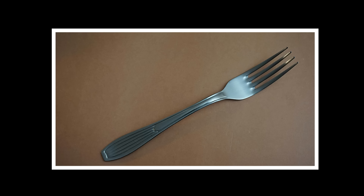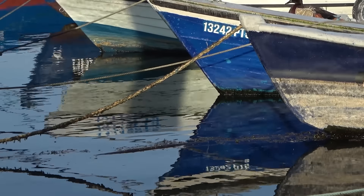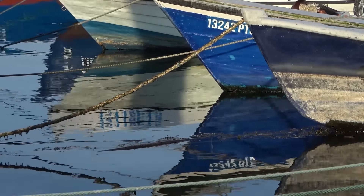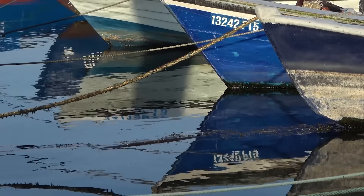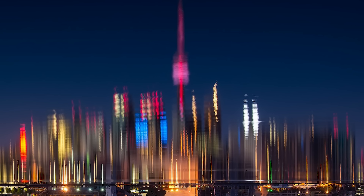Pay attention to how the light interacts with these materials and you will discover endless creative possibilities. So here is a challenge — remember that ordinary object you photographed earlier? Try finding a reflective surface and shooting it again. You will be amazed at the difference. That's all for today. I hope you are feeling inspired to try these techniques in your own photography. Thanks for watching — don't forget to like and subscribe for more behind-the-scenes insights into impressionist photography. Until next time, keep chasing the light.